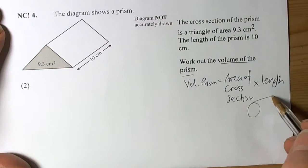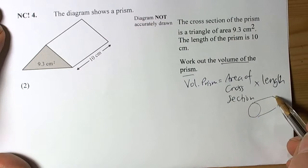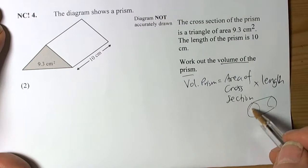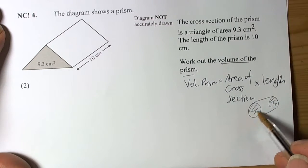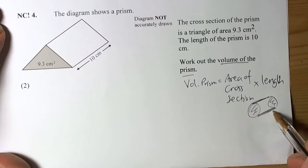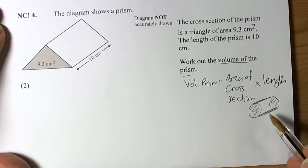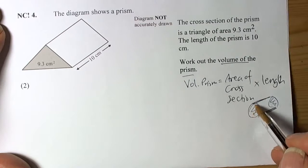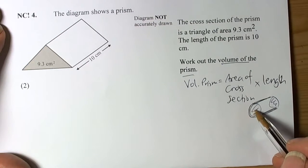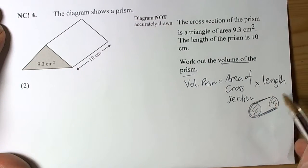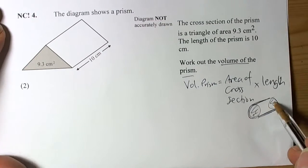What we should remember is that a prism has the same cross section at either end and parallel edges between those two cross section faces. So if we work out the area of one end, one face at the end, then we times by the length to get the volume of the extended 2D shape.